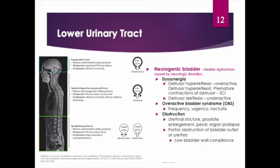Lesions at the sacral area of the spinal cord or peripheral nerves result in underactivity or hypotonicity — a flaccid bladder — often with loss of bladder sensation. Neurological disorders developing above the pontine micturition center result in detrusor hyperreflexia, known as an inhibited or reflex bladder. These are upper motor neuron lesions where the bladder empties automatically as soon as it becomes full, while the external sphincter still functions normally. Causes include stroke, TBI, dementia, and brain tumors.